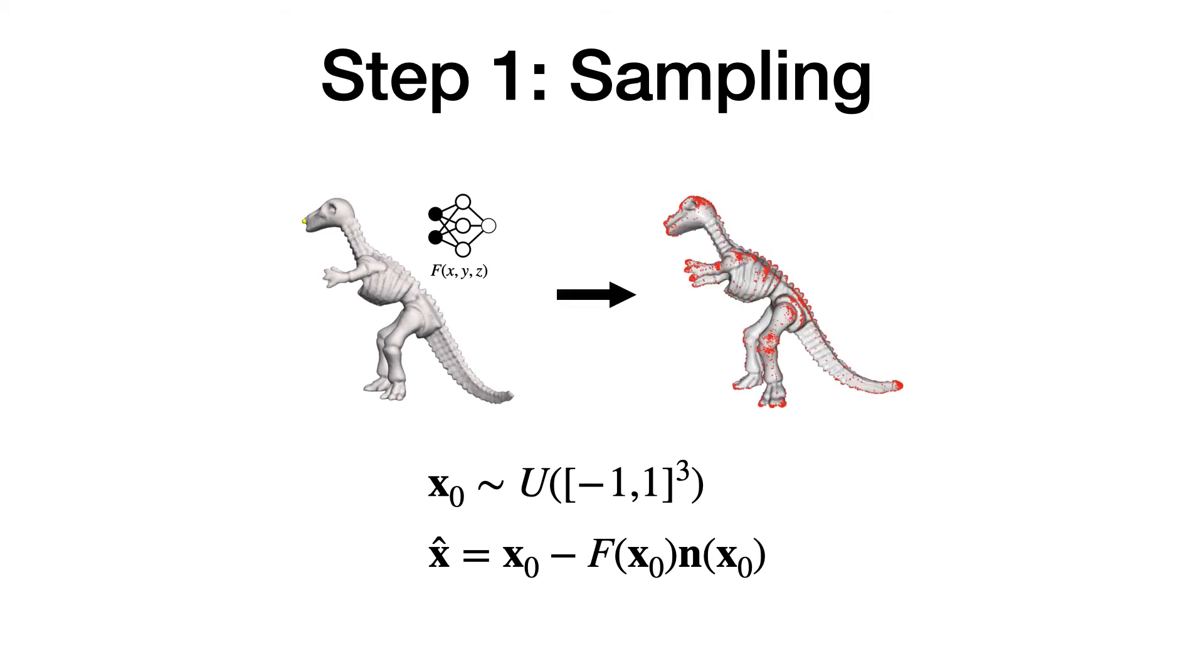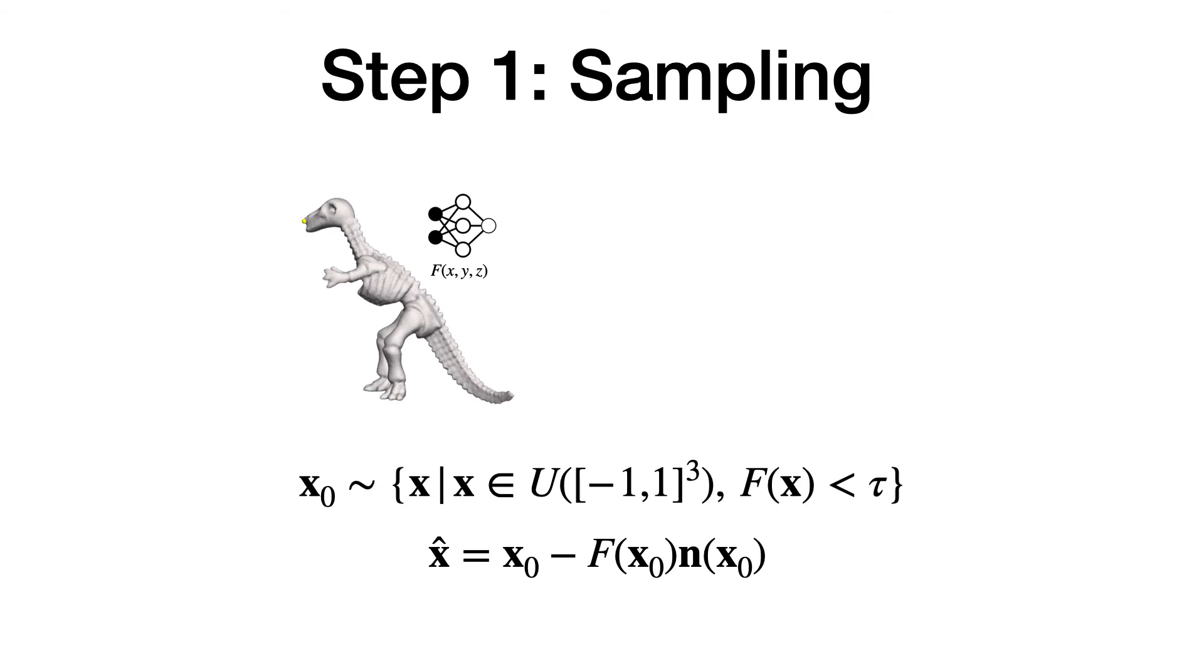However, this will result in points concentrated near the high curvature area. To alleviate this issue, we additionally filter out uniformly sampled points that are too far away from the zero isosurface, and then move them toward it. This simple rejection step produces very uniform samples.